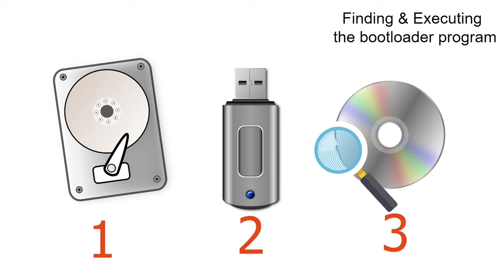MBR is a classical way to store a bootloader program and partition information. It reserves the first 512 bytes of the storage device for this information. Only BIOS-based systems use it; UEFI-based systems use GPT instead. MBR is non-redundant — it does not replicate the records it contains. If it is corrupt, the system will not boot. It supports a maximum of 14 partitions.